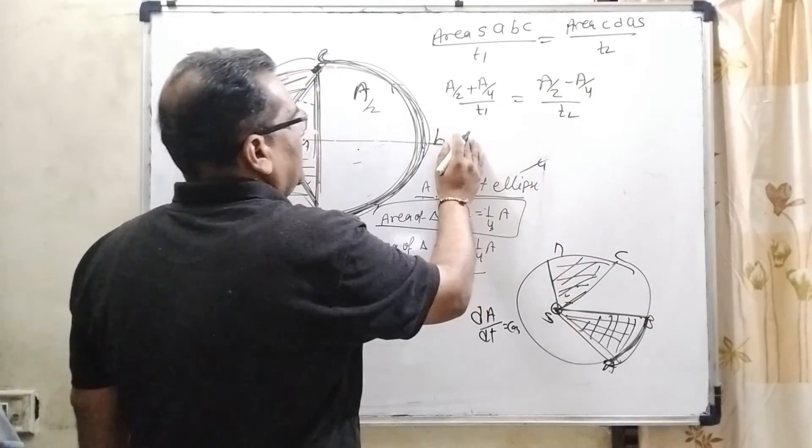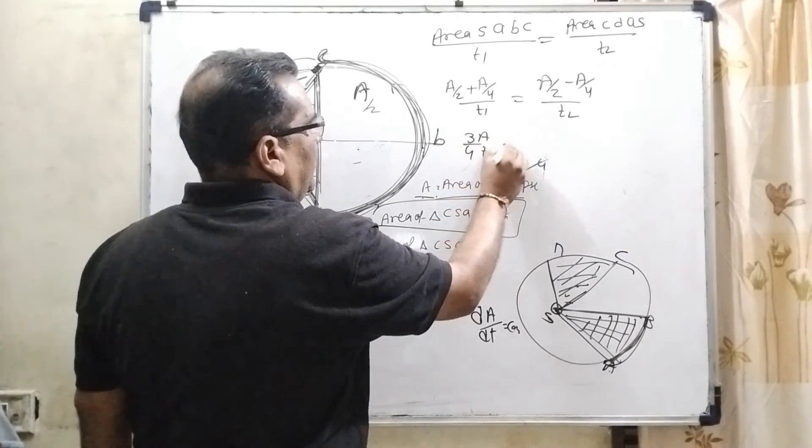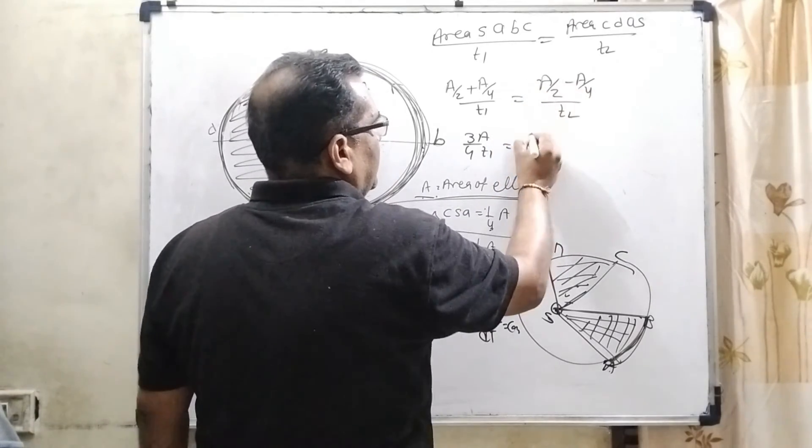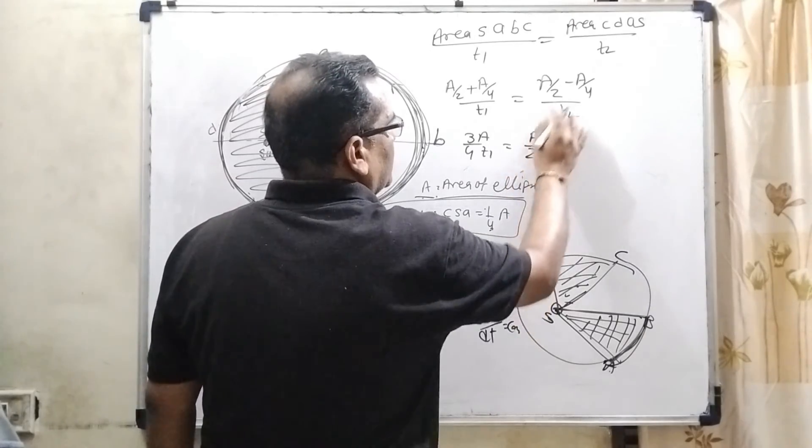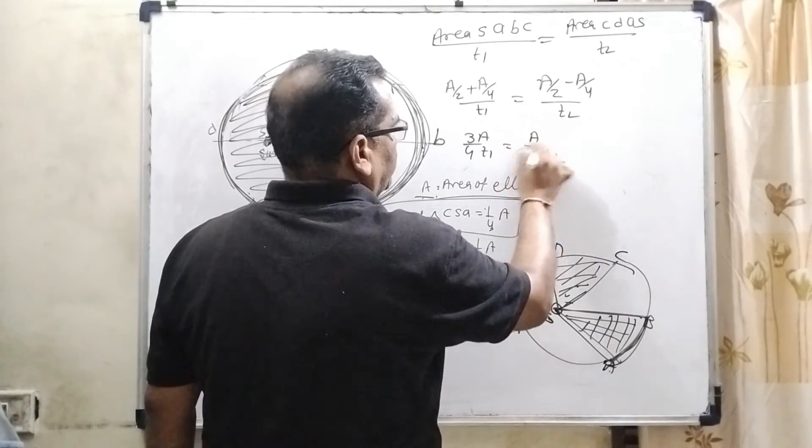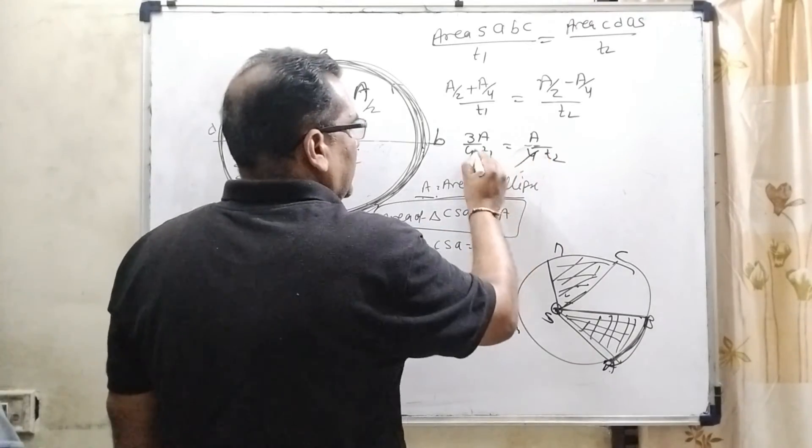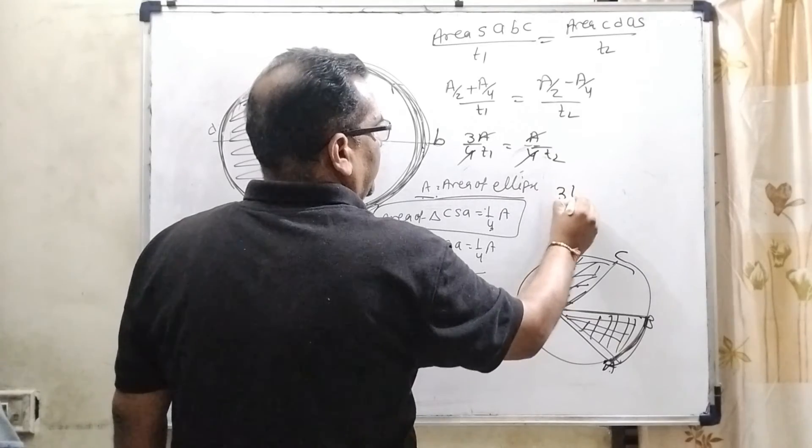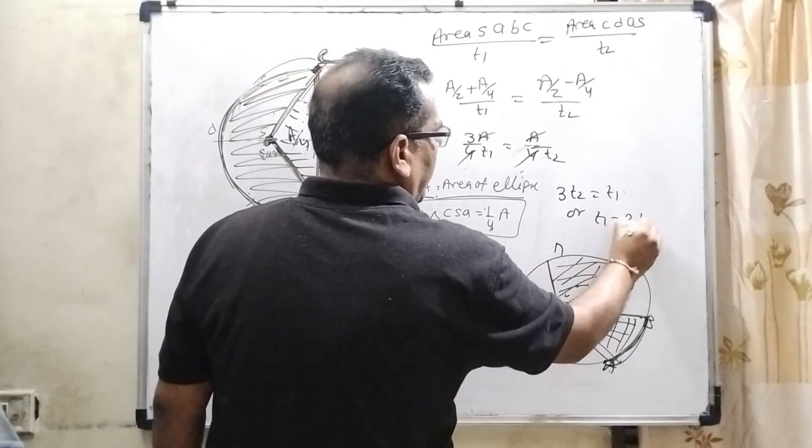So, here A/2 plus A/4 upon T1. A/2 minus, sorry, A/4 upon T2. So, here A cancels out. Then 3T2 equal to T1 or T1 equal to 3T2.